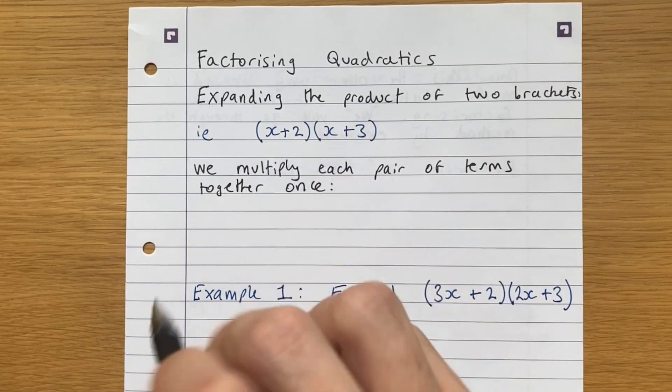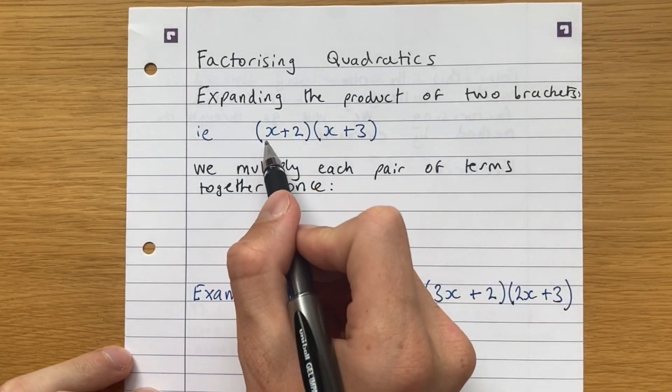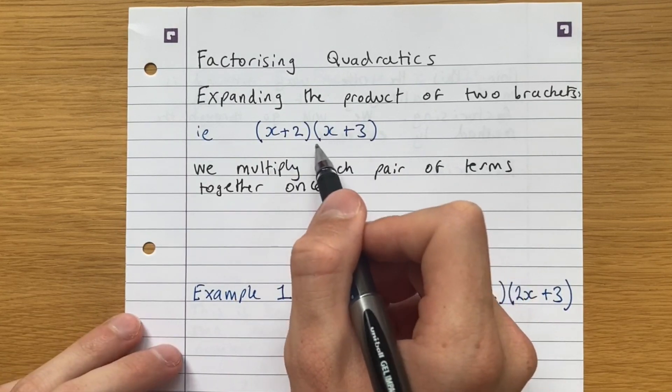We never had two brackets next to each other. And when we do have something like this, it's a very similar format. You multiply each term in the first bracket with each term in the second bracket as follows.